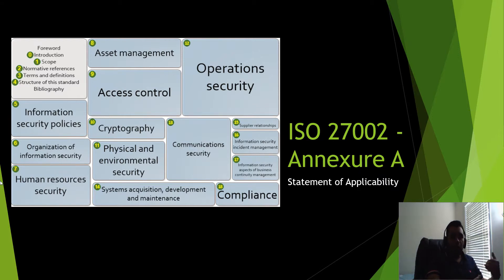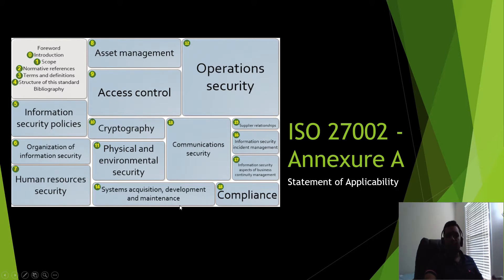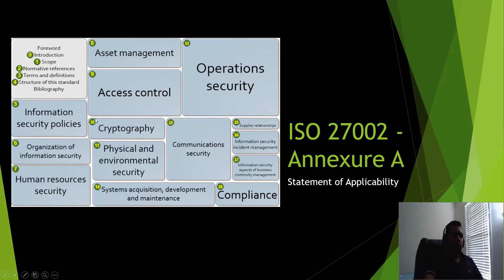You don't have to implement all 114 controls — it depends on your environment. For example, if you're a legal firm that does no software development, section 14 could be entirely out of scope. If you're a company with all remote employees and no office, section 11 on physical security could be out of scope. Similarly, if you're not doing any cryptography, you can put that section out of scope and document it in your statement of applicability.